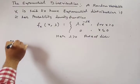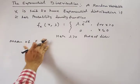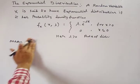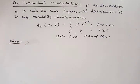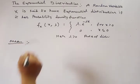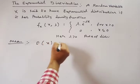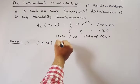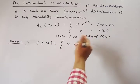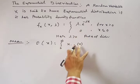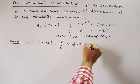Now, mean of exponential distribution. The mean formula is: E(X) = integral from 0 to infinity of x · f(x) dx. So this equals integral from 0 to infinity of x · λ · e^(−λx) dx.